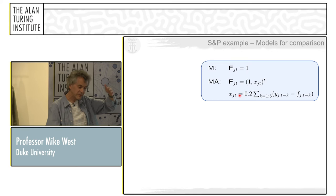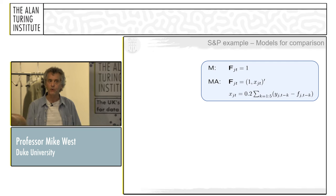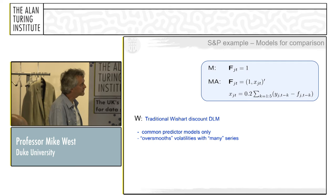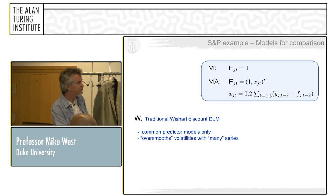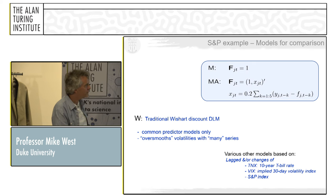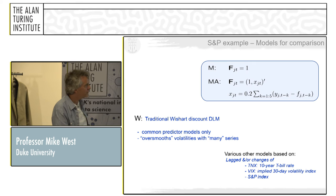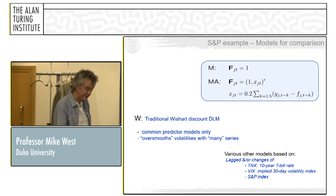The first model has just a wobbling mean in returns — no regression. The second builds in some short-term momentum, basically an average of the forecast errors at the last two time points. These are the decoupled models. The papers compare against the standard Bayesian model for volatility matrices — the Wishart stochastic process model — which only works when all series have the same predictors, and it's not really that good in more than a few dimensions anyway because Wishart distributions are very constraining with one degree of freedom for each dimension. We have other more practical models with very customized predictors, volatility predictors, interest rate measures, and other things.